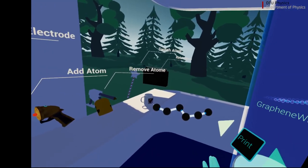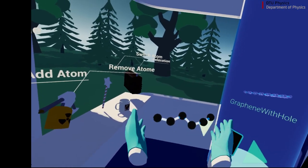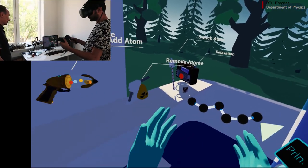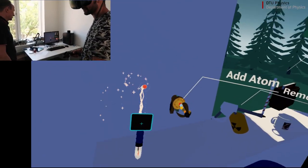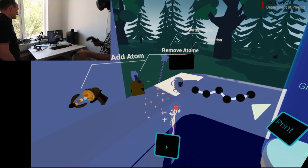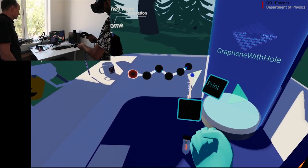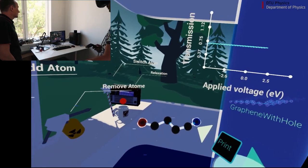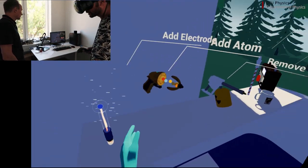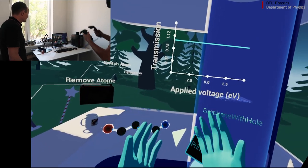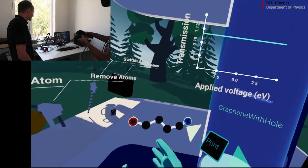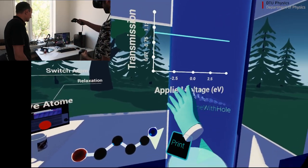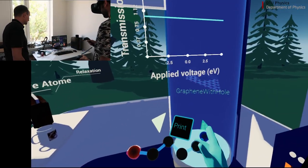And then once you've created a molecule, let's say this is the one I wanted to build, I can start doing some measurements on it. So I can just grab this tool that allows me to add electrodes, and I will add a positive electrode and a negative electrode here. Right away, I get some measurements of the transmission of the electron through the device as a function of the flight voltage.